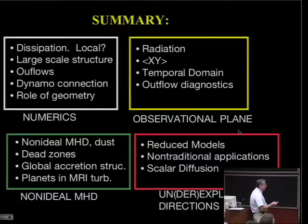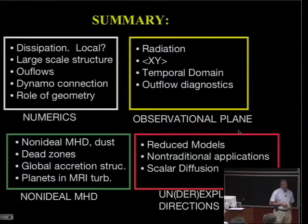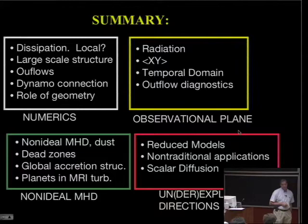So, a quick summary. I've divided the domain into numerics. The observational plane, radiative forces, correlations. The temporal domain, outflow diagnostics. Many effects in the non-ideal MHD. Dead zones, I hardly mentioned, but very important to understand. Or perhaps I should say so-called dead zones, because they may very well be, there may be stresses there that have been overlooked. Planets in MRI. There's another topic. Another future direction. And then, unexplored and underexplored directions. Reduced models, non-traditional applications, and scalar diffusion problems are all, I think, poised to become front and center. And I'll stop there. Thanks.